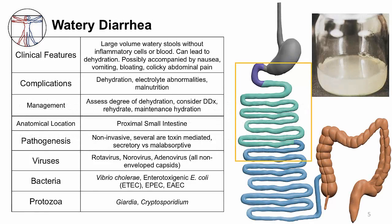Watery diarrhea is caused by various pathogens: viruses, bacteria, and protozoa. The disease occurs in the small intestine and results in a large loss of fluid and electrolytes. Thus, the main complication is dehydration with electrolyte abnormalities. Treatment is rehydration.